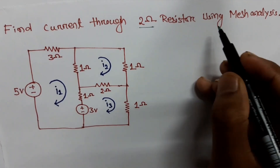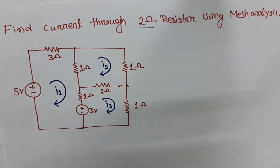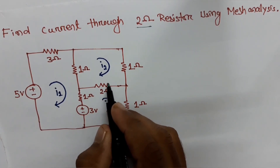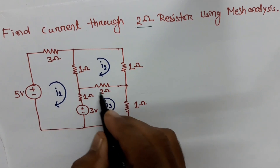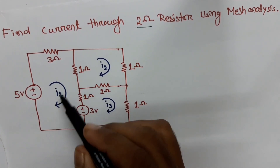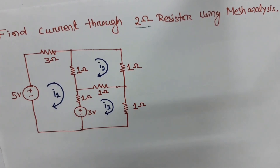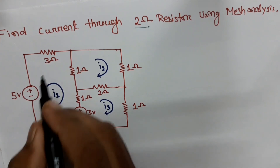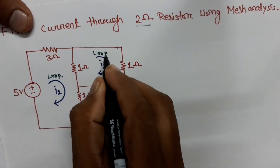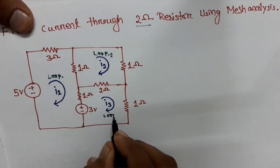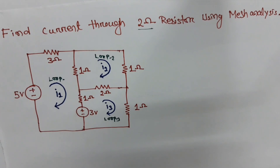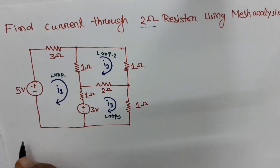Here is the given circuit. There is a 2 ohm resistor here, and our objective is to find the current through this 2 ohm resistor. There are 3 loops in the circuit — this is loop 1, this is loop 2, and this is loop 3.